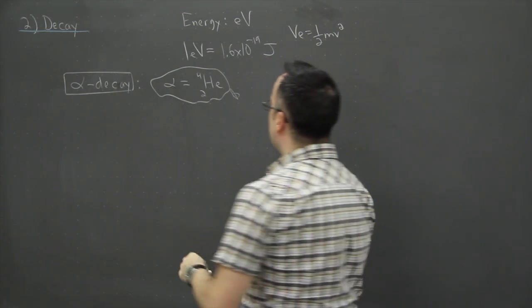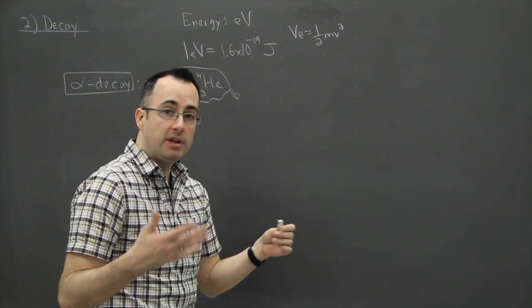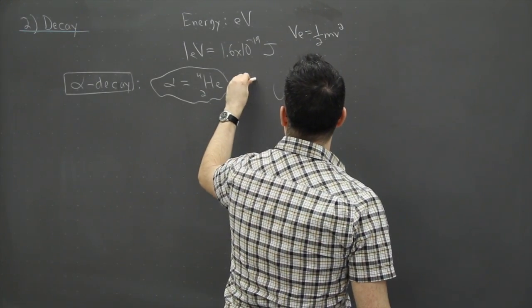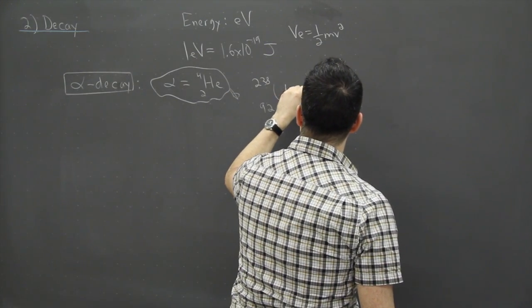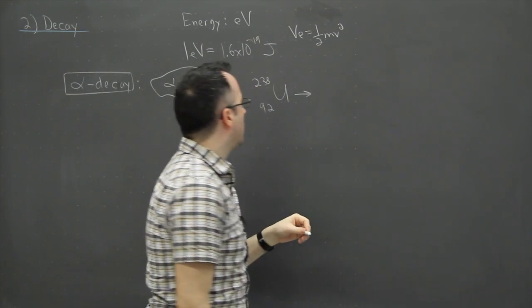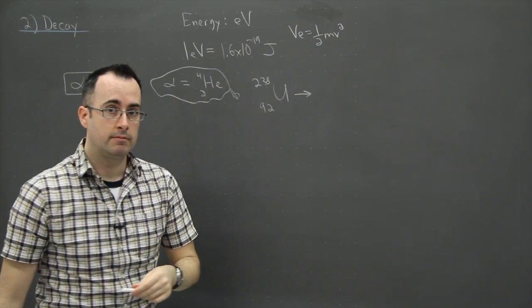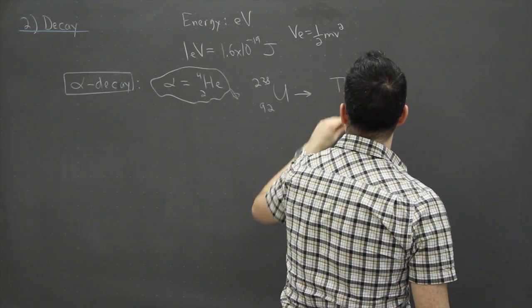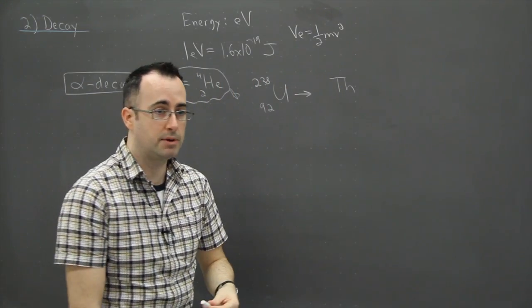So an example then of alpha decay, maybe you're asked to fill in a decay equation. So maybe you're given something like uranium-238. Maybe then you'll be told uranium-238 it undergoes alpha decay and then they'll tell you, they'll probably tell you what element it is because you're not supposed, you don't have to know what every element in the periodic table is.